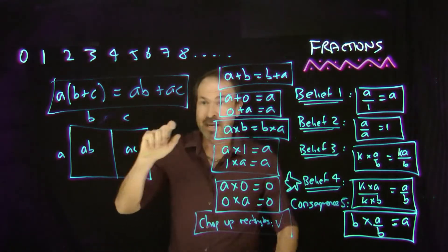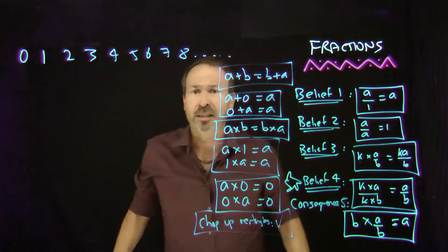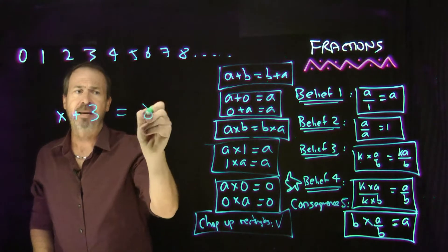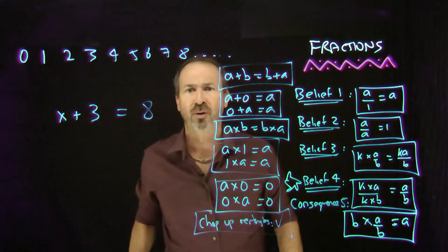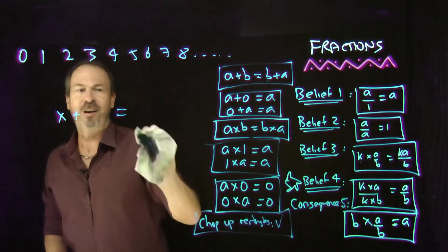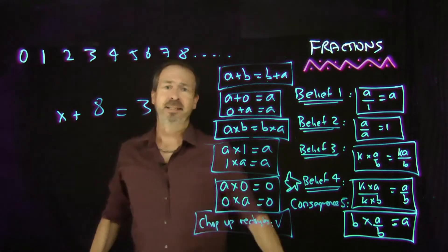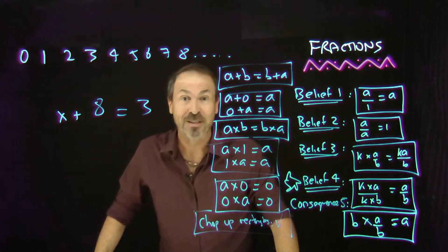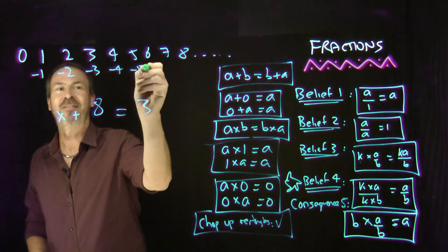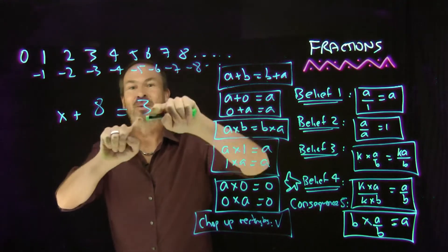That seems pretty good for the counting numbers, but we know we don't just stick with them. The counting numbers are great at solving equations like x plus 3 equals 8 — the counting number 5 works. But they're not good at x plus 8 equals 3: there's no counting number that makes that a true sentence. So people say we need more types of numbers, and they introduce the negative numbers: negative 1, negative 2, negative 3, and so on. Then there will be a number that works: negative 5 plus 8, we like to believe, is 3.